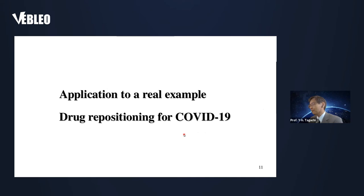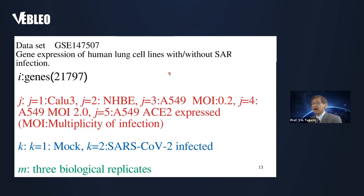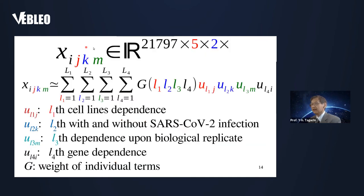I would like to apply this framework to two real examples. The first example is drug repositioning for COVID-19. This study has already been published last September, and since then it has been accessed more than 5,000 times and cited 11 times. The dataset analyzed has 21,000 genes, with samples composed of 5 cell lines, two exposure conditions — infected by SARS-CoV-2 or not — repeated three times as biological replicates. The whole dataset can be expressed as a tensor X(i,j,k,m).